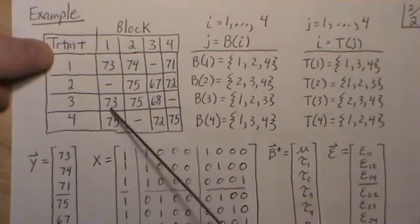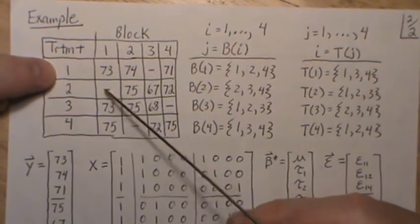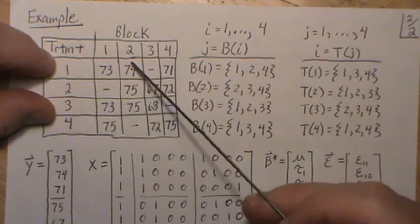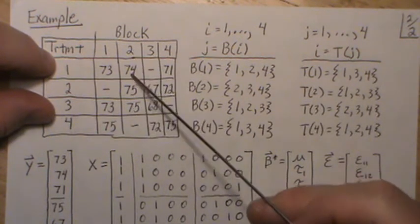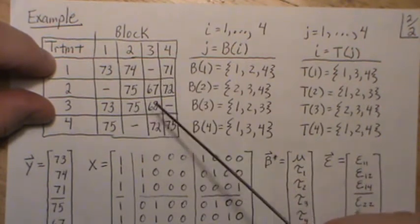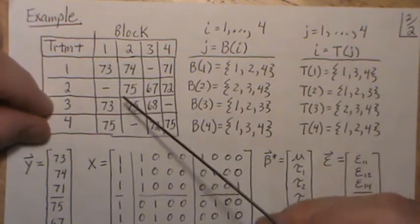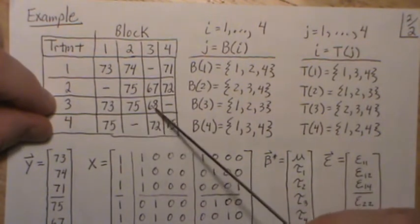If we're going to look within a block, treatment one is paired with treatment three—there's one occurrence. Treatment one is paired with treatment three in block two and not again. But if we look at all other pairs, it should be two also. So three and four, three and four—they're each paired twice.